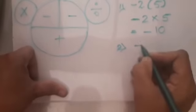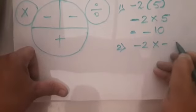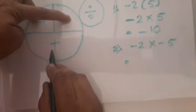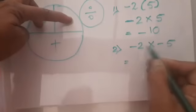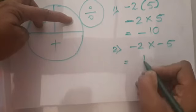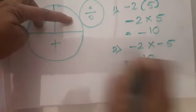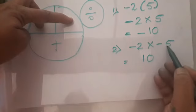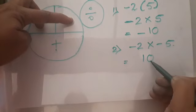Say the second example: minus 2 into minus 5. Here you cover minus and minus — what remains is plus. So you multiply the numbers: 2 fives are 10, and the sign is positive. Minus 2 into minus 5 is 10.